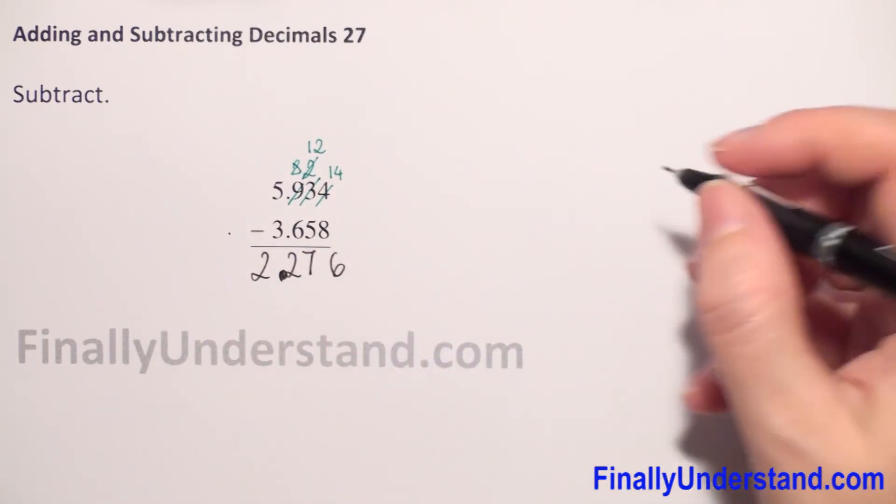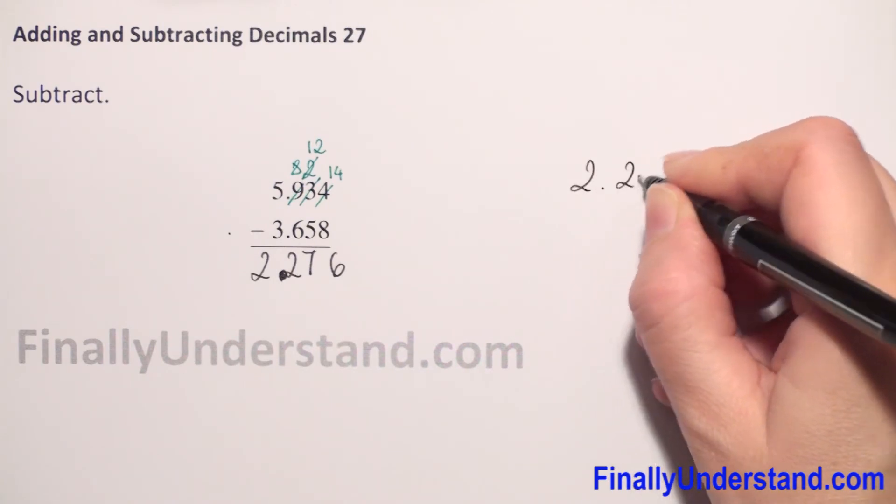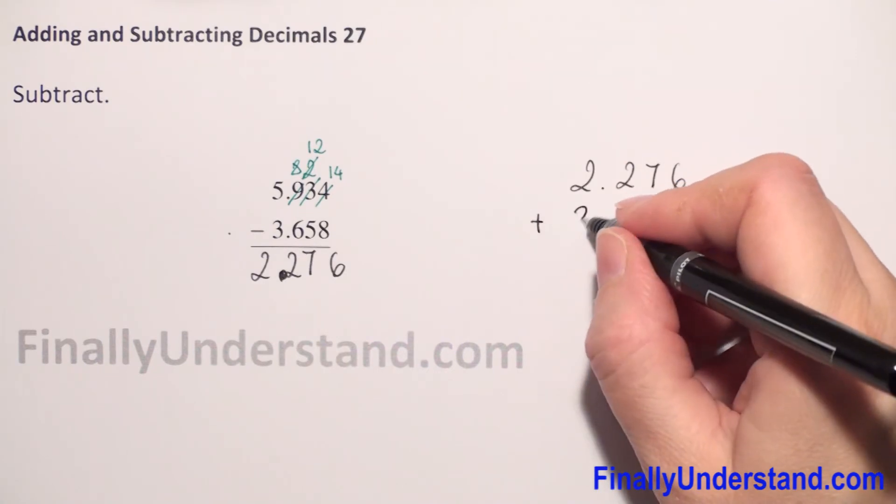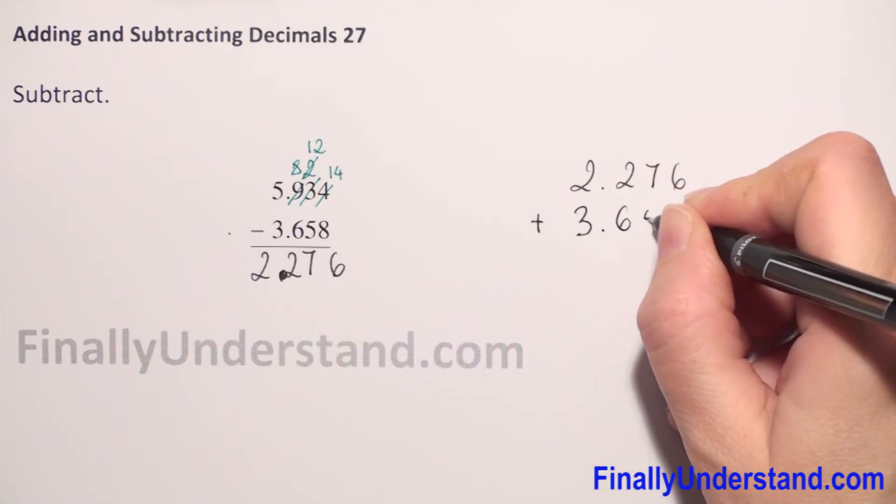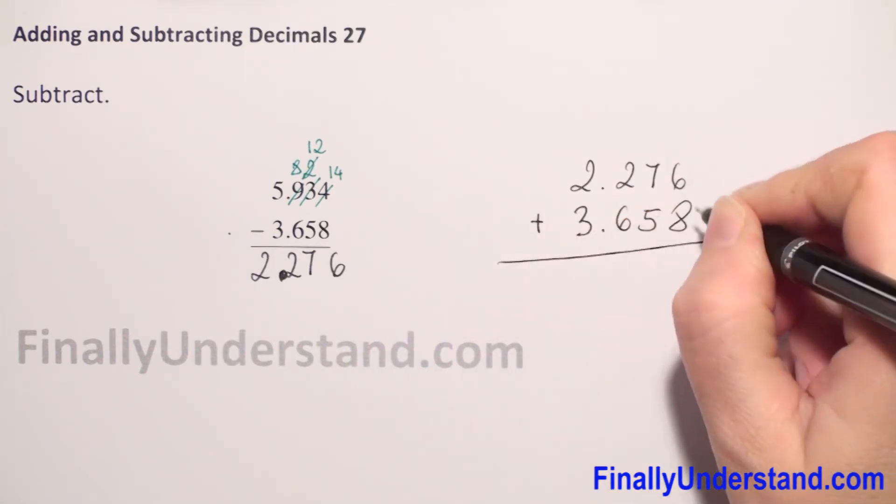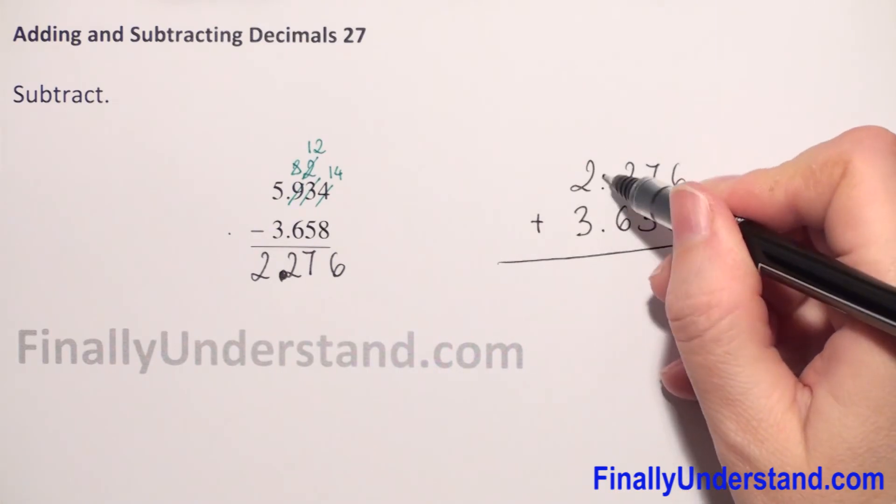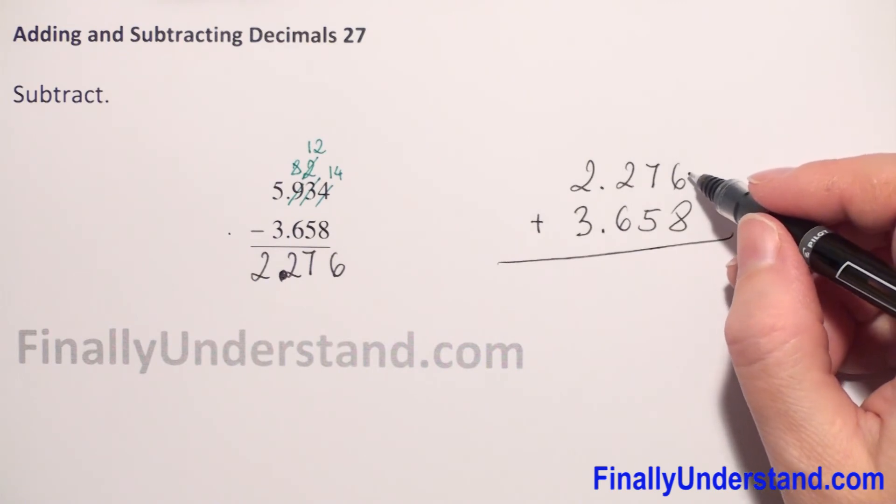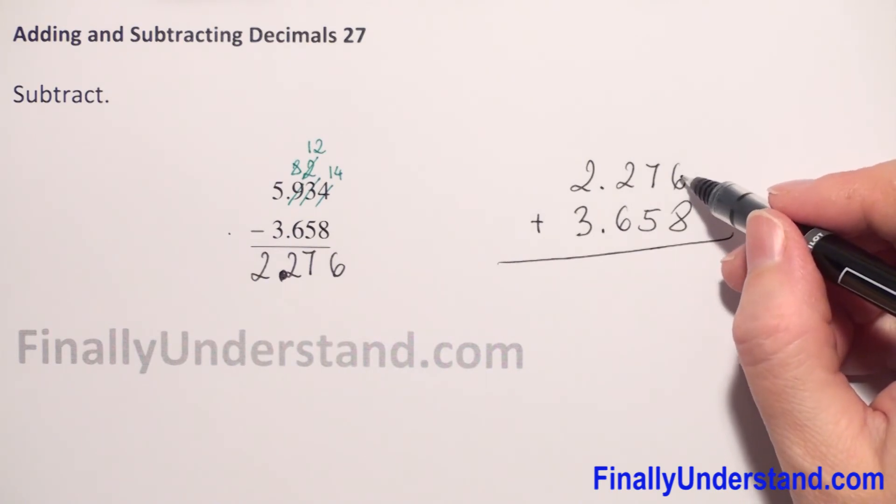We have to check: 2.276 plus 3.658. We have to keep the decimal point in the same column and we start from the last column when we add.